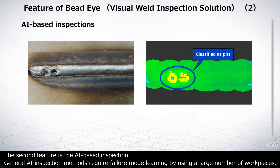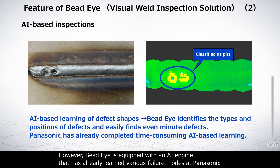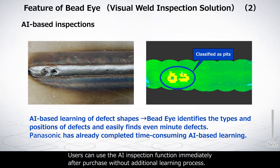The second feature is the AI-based inspection. General AI inspection methods require failure mode learning by using a large number of workpieces. However, Bead Eye is equipped with an AI engine that has already learned various failure modes at Panasonic. Users can use the AI inspection function immediately after purchase without any additional learning process.